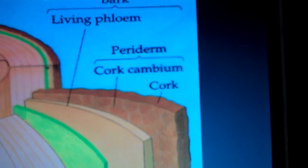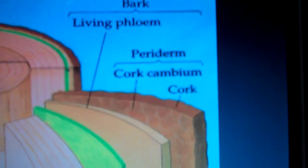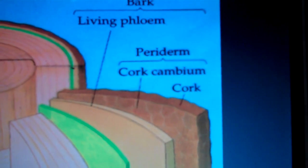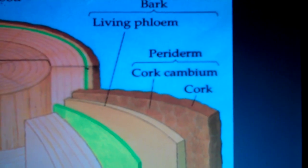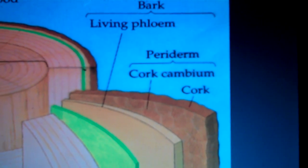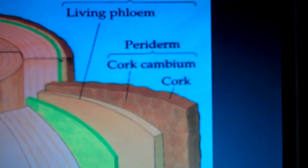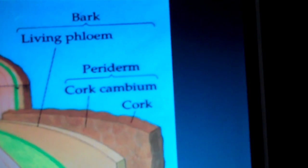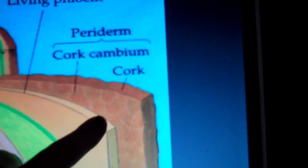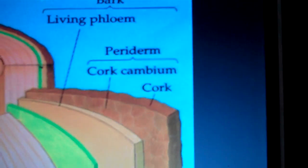A young tree is going to be soft on the outside, and as it grows it hardens and develops bark, because the epidermis is being replaced with periderm. The second lateral meristem we'll talk about is the cork cambium, which is on the outside part of the phloem, and it's going to produce cork.